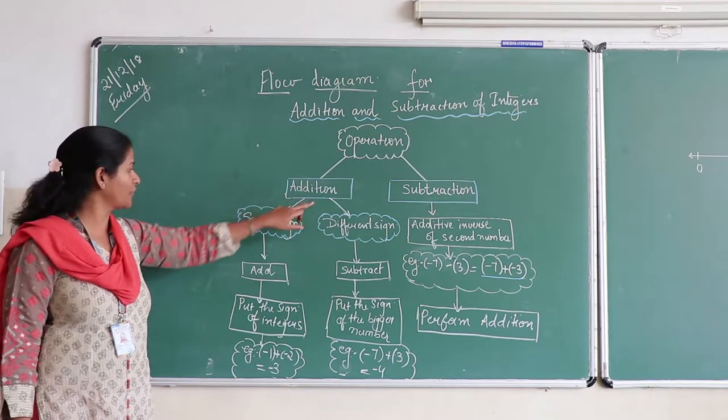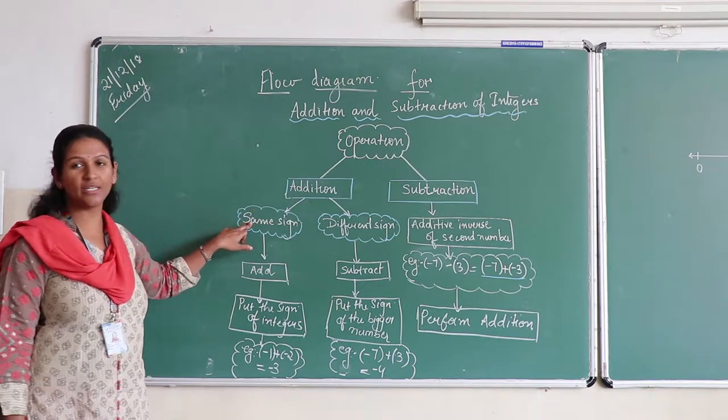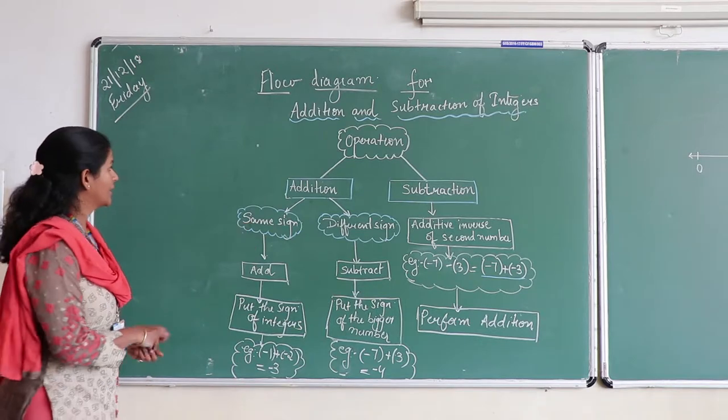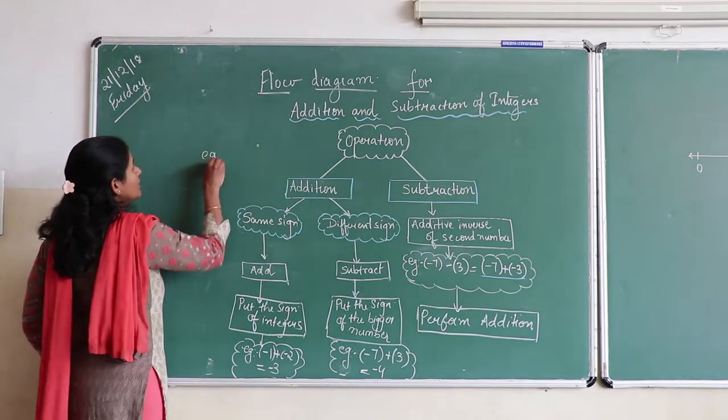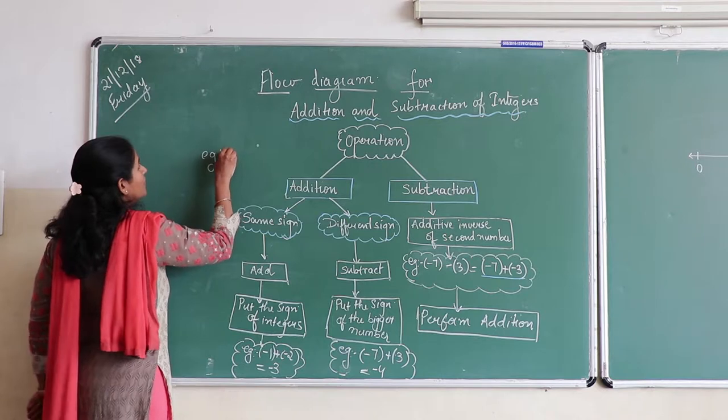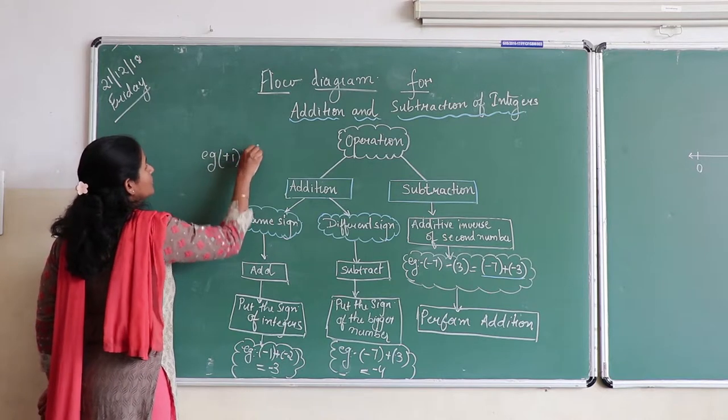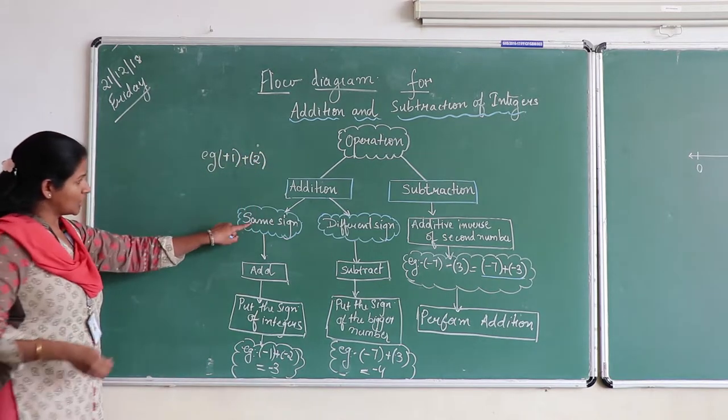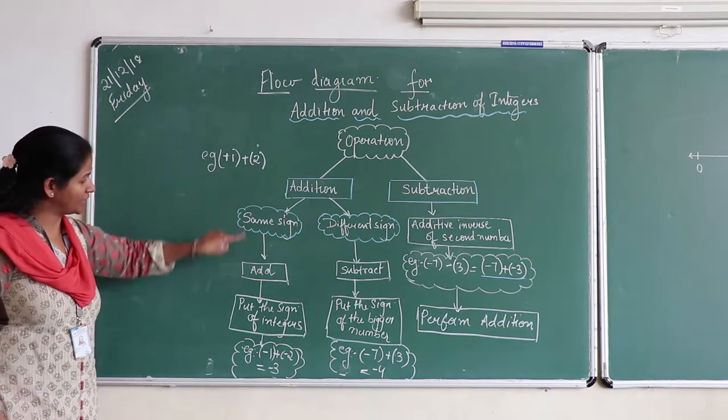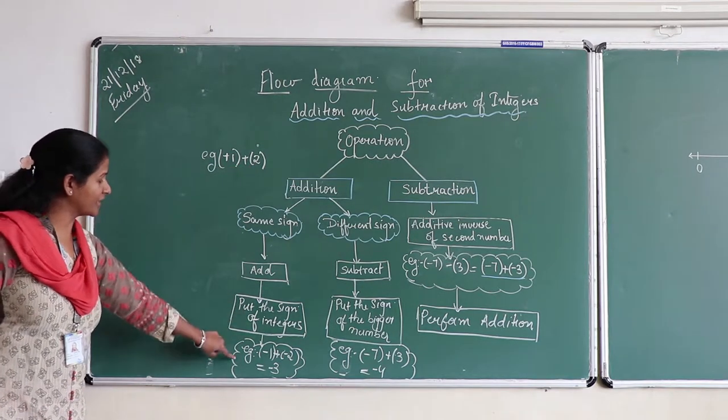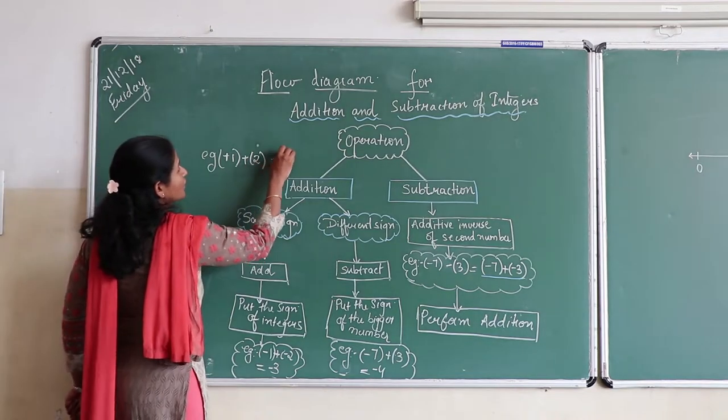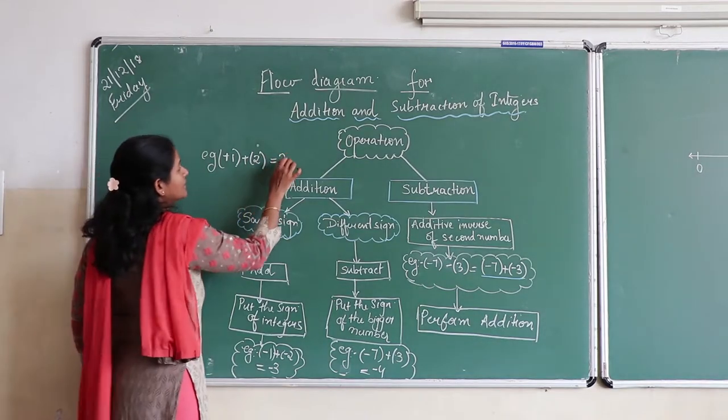In the addition of integers, if the two integers are of the same sign, example plus 1 plus 2, you have to add these two integers and get the desired result which we already know in this case is 3.